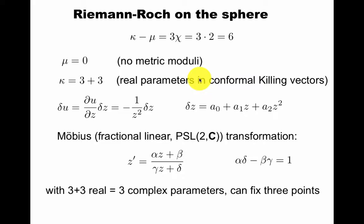In fact, the Riemann-Roch theorem tells us that the number of conformal Killing vectors minus the number of metric moduli should be 3 times the Euler characteristic, which is 6. If there are no metric moduli, there must be 3 plus 3 conformal Killing vectors.